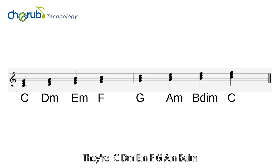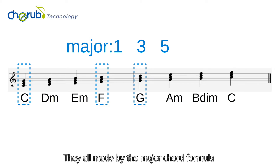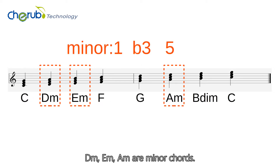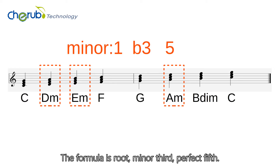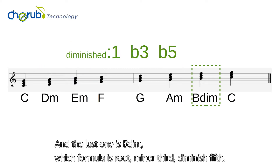The seven chords are C, D minor, E minor, F, G, A minor, and B diminished. C, F, and G major are major chords, made by the major chord formula: root, major third, perfect fifth. D minor, E minor, and A minor are minor chords with the formula root, minor third, perfect fifth. And the last one is B diminished, whose formula is root, minor third, diminished fifth.